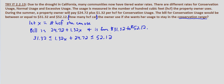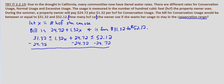Now this is an 'and' compound inequality, but rather than writing it all out in 'and' form and solving each side, we'll just do it all at once — subtract 24.72 from both sides. That leaves us with 6.6 is less than or equal to 1.32X, which is less than or equal to 27.4. The 6.6 is 31.32 minus 24.72, and the 27.4 is $52.12 minus $24.72.